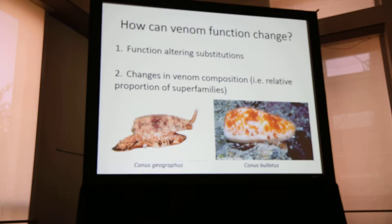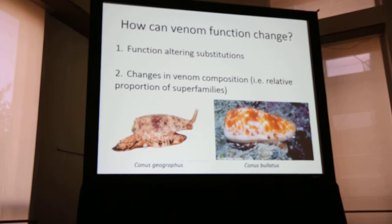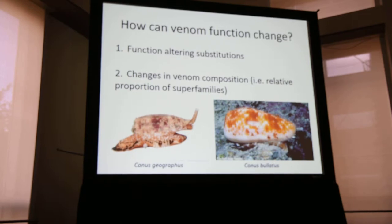The second way that venom function may change is due to the fact that different conotoxins have different molecular targets and due to the potential for synergistic effects between different conotoxin components. We don't know too much about how changes in venom composition track shifts in ecology, and we don't know too much about how venom composition varies across the phylogeny of Conus, because we don't have a lot of transcriptomes. The ones that we do have are fairly widely scattered across a very large phylogeny of cone snails.